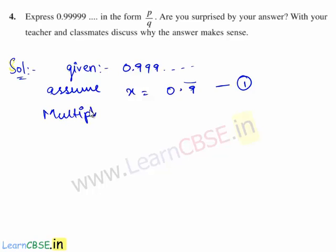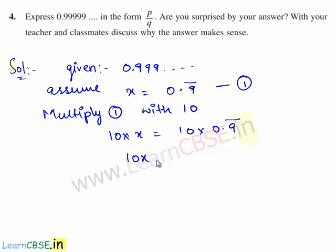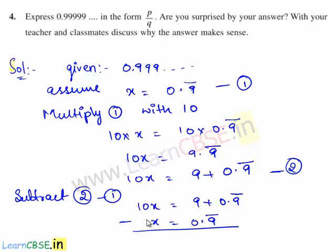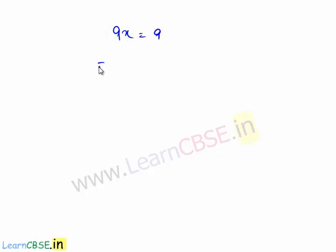Since in the given decimal expansion one digit is repeating, we multiply equation 1 with 10. So we have 10 times x is equal to 10 times 0.9 bar. This gives 10x is equal to 9.9 bar, which can be written as 10x is equal to 9 plus 0.9 bar. Consider this as equation 2. Now we shall subtract equation 1 from equation 2. 10x minus x is equal to 9x, which is equal to 9. Therefore 9x is equal to 9, which implies x is equal to 1.